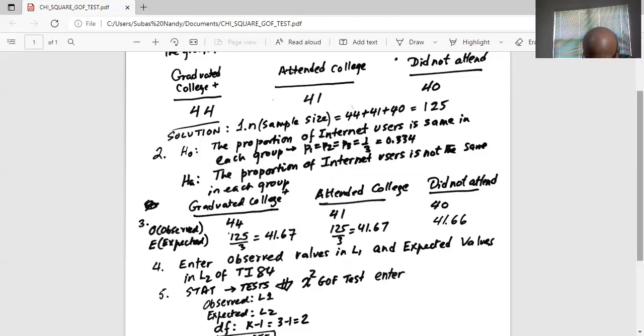So first thing we will do is clear the memories of the calculator. Second plus on top of enter, then number four. Clear all list, then hit enter. Done. Then stat and one. So I will enter the observed counts in L1, which is 44, 41, and 40.